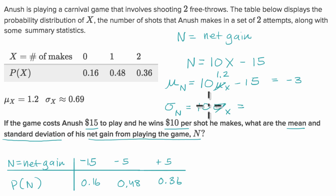So this is going to be 10 times 0.69, which is, this was an approximation, so I'll say this is approximately equal to 6.9. So this is our new distribution for our net gain. This is the mean of our net gain, and this is roughly the standard deviation of our net gain.